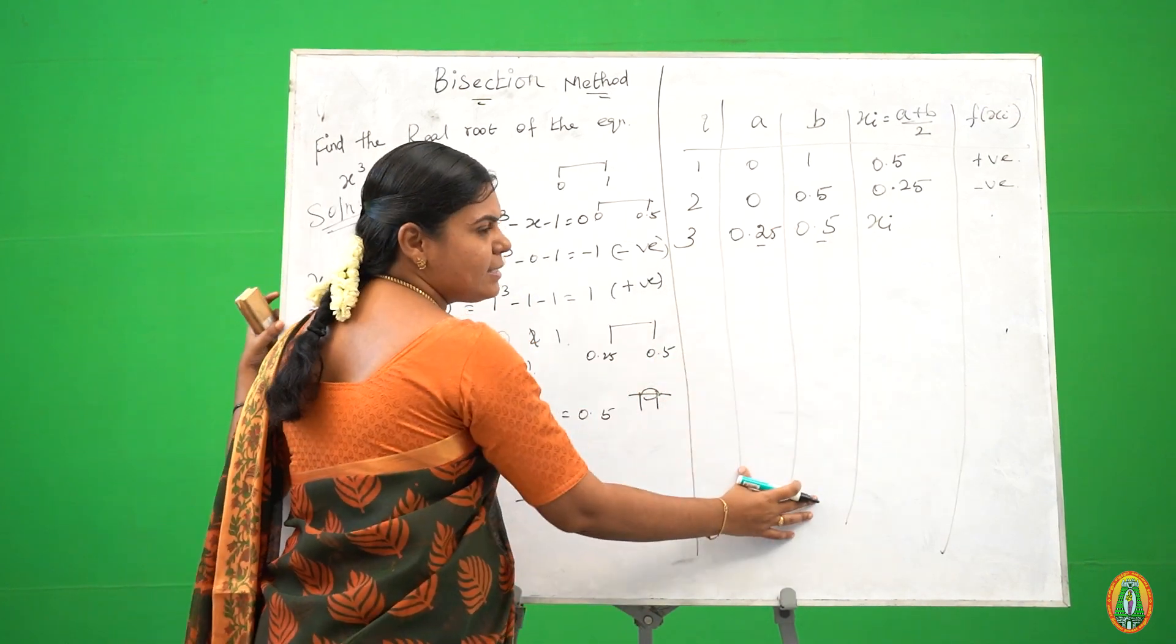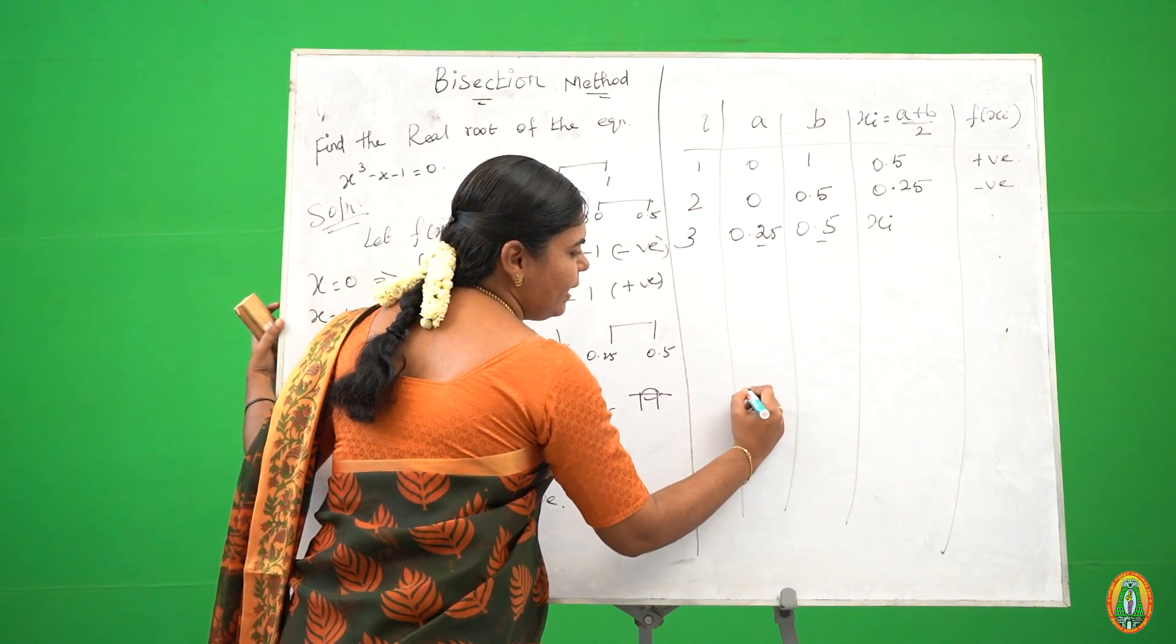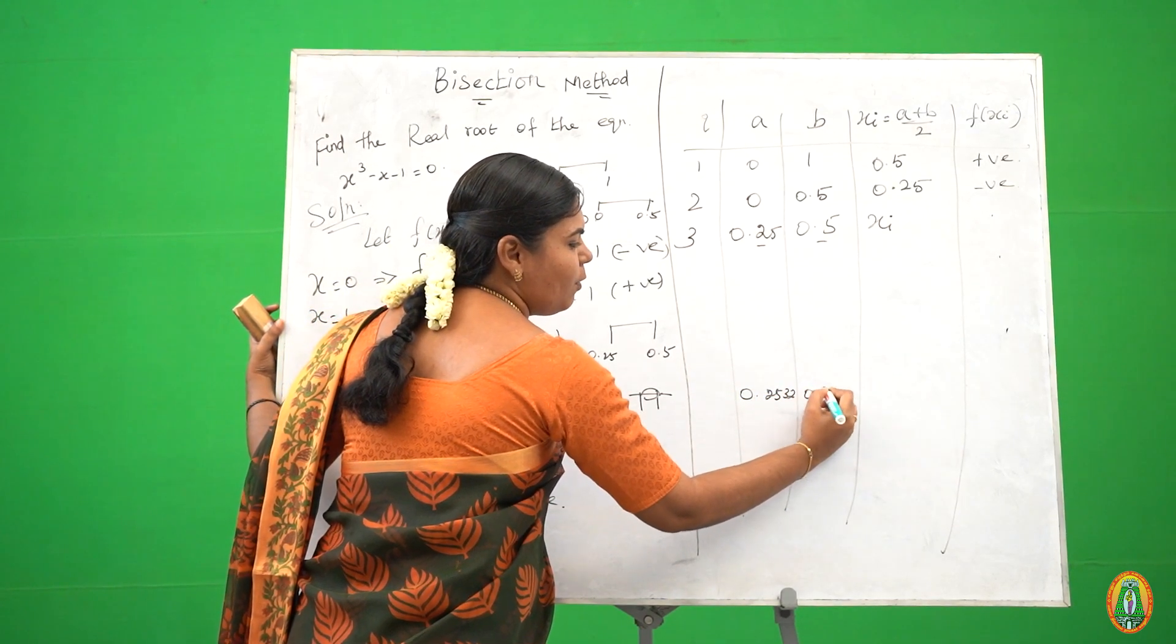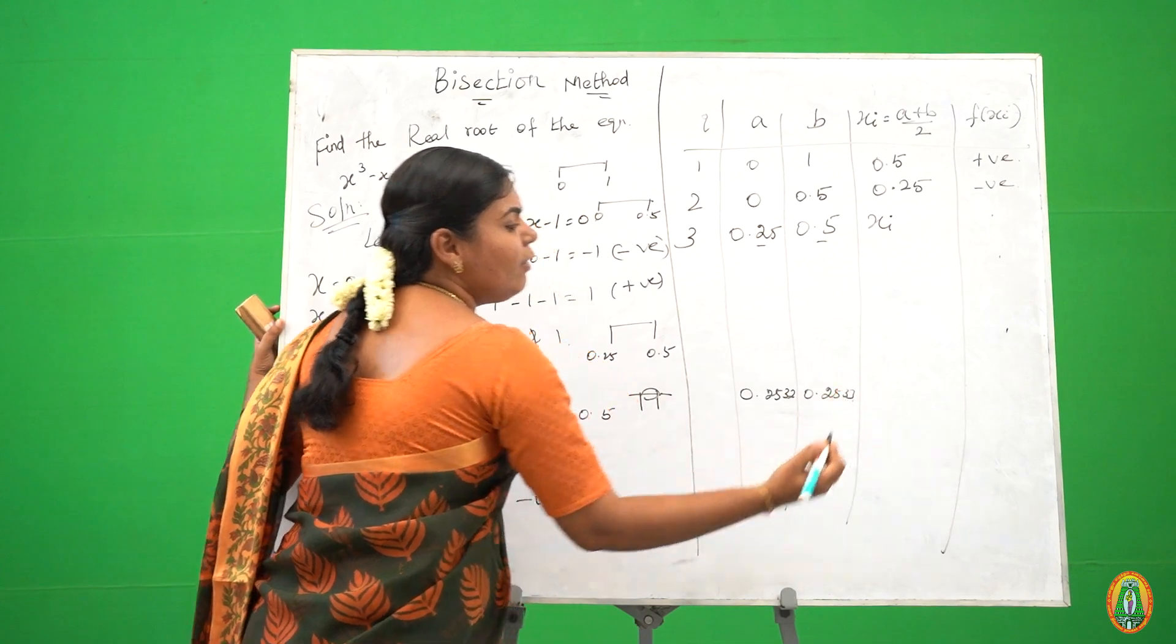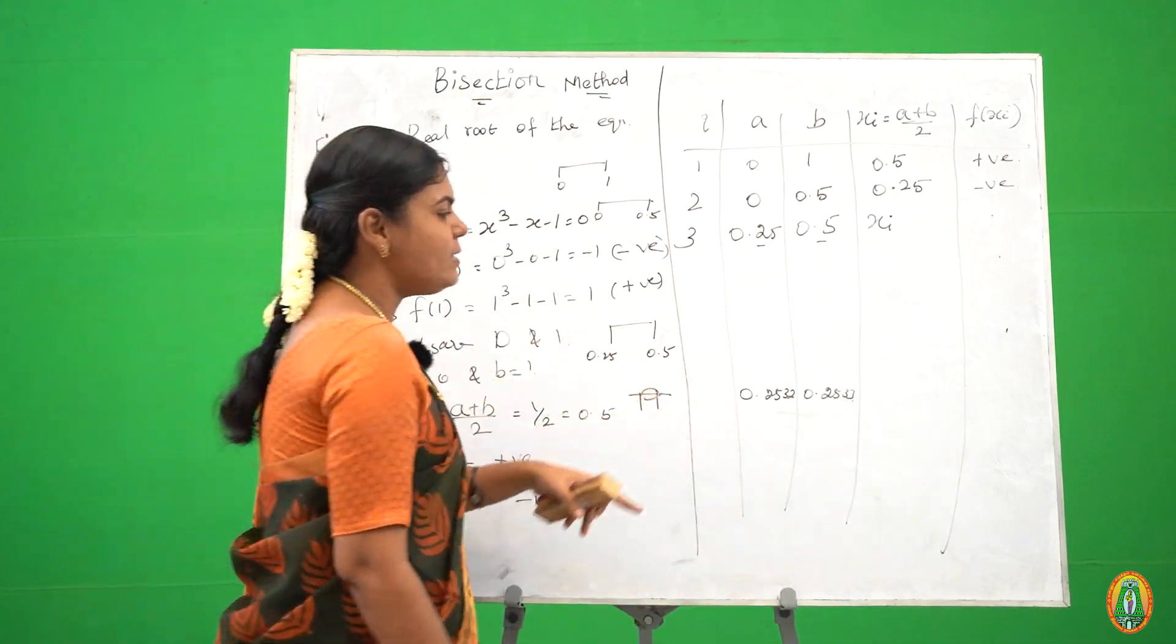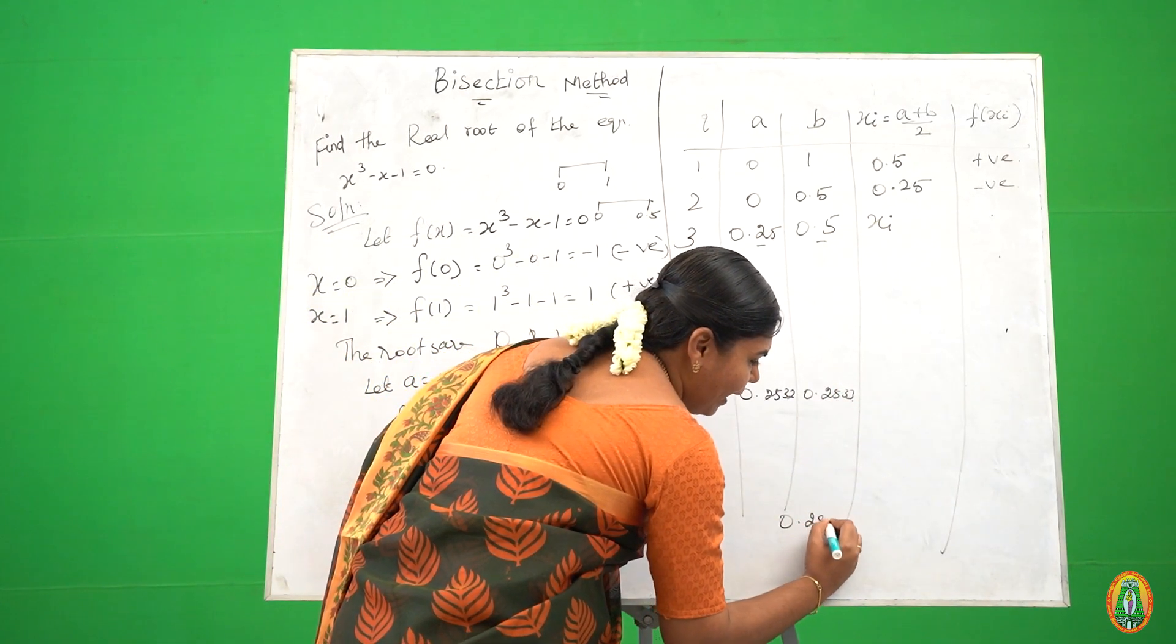So suppose we calculate this table, we got a value 0.2532 or 0.2533. The accuracy value is 0.2533.